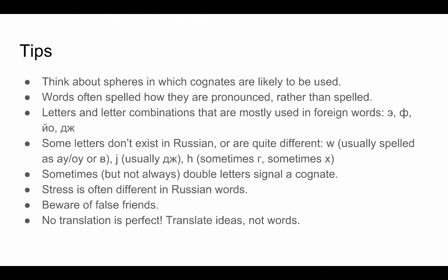Sometimes words are spelled how they're pronounced rather than how they're spelled in English. And there are some specific letters and letter combinations that are mostly used in foreign words. For example, the letters E and F — when you see them, it's most likely that that word is a cognate from another language.